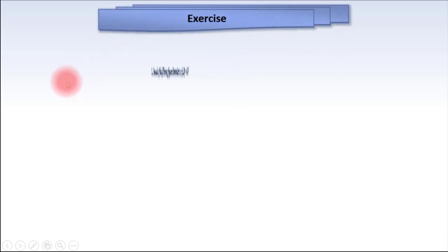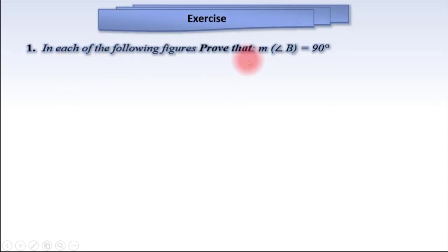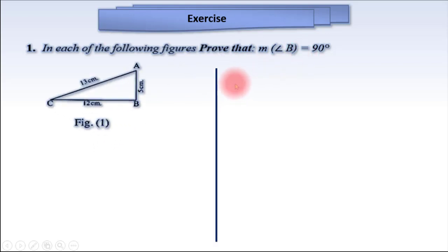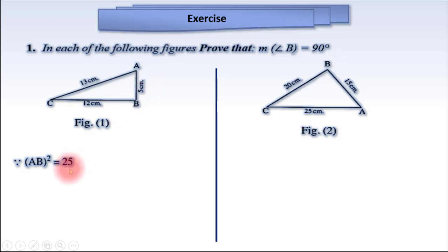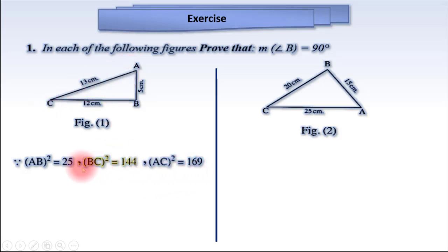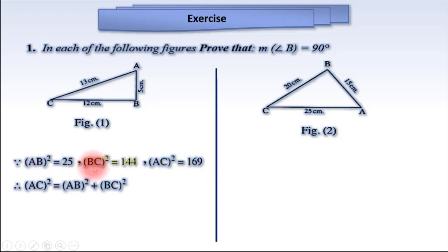Exercise: Which of the following figures proves that the measure of angle B equals 90 degrees? In triangle ABC, AB equals 5 cm, BC equals 12 cm, and AC equals 13 cm. Since AB power 2 equals 5 power 2 equals 25, and BC power 2 equals 12 power 2 equals 144, and AC power 2 equals 169, the sum of 25 and 144 equals 169. Therefore, AC power 2 equals AB power 2 plus BC power 2, so the measure of angle B equals 90 degrees.